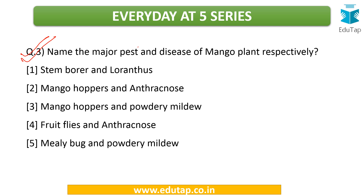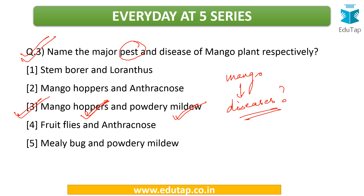The third question: name the major pest and disease of the mango plant. We need to know the major pests and diseases for each crop. For mango, the major pest is mango hoppers and the major disease is powdery mildew — so option three is correct. As homework, list some other diseases that affect mango crop, and also name one other pest apart from mango hoppers that affects the mango plant.